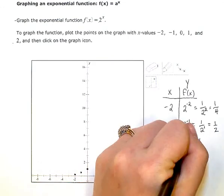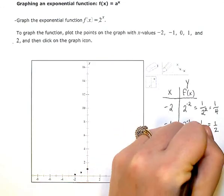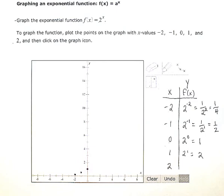For 1 we have 2 to the 1st. Anything to the 1st power is just itself, so use your plot point tool and put in 1 comma 2 as your coordinates.